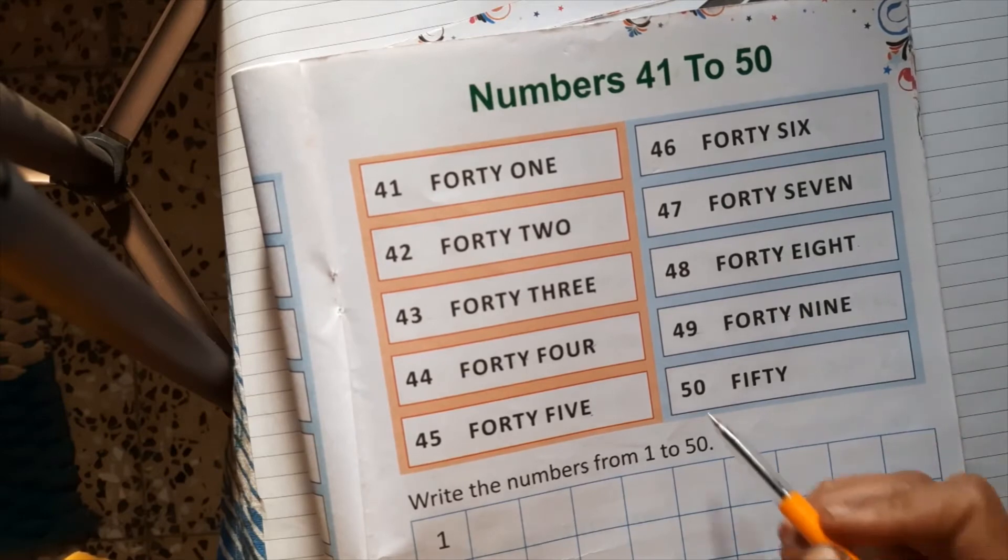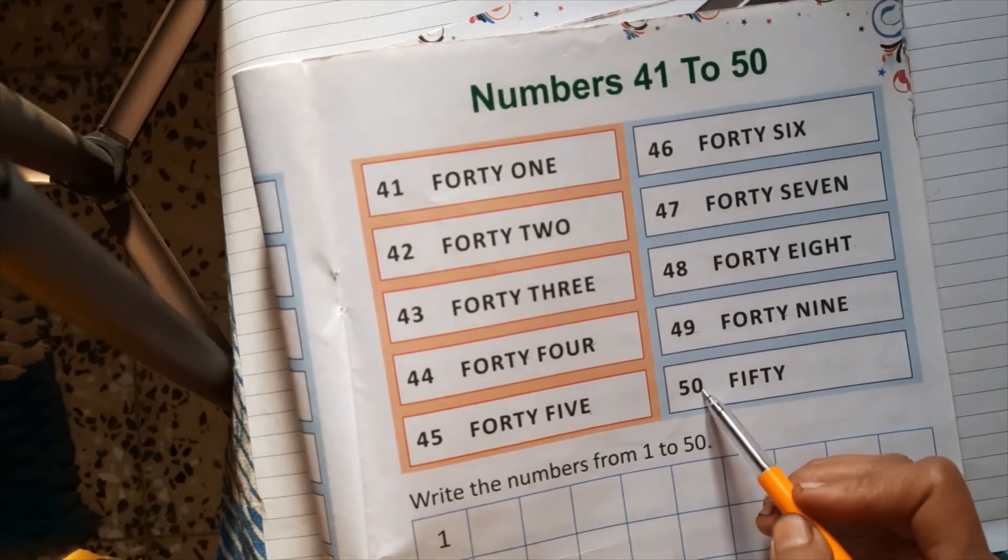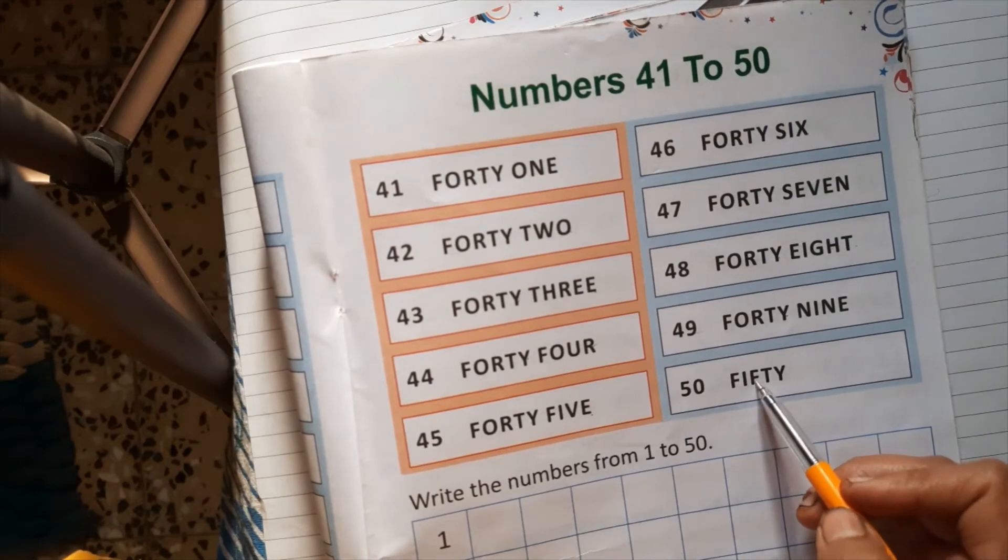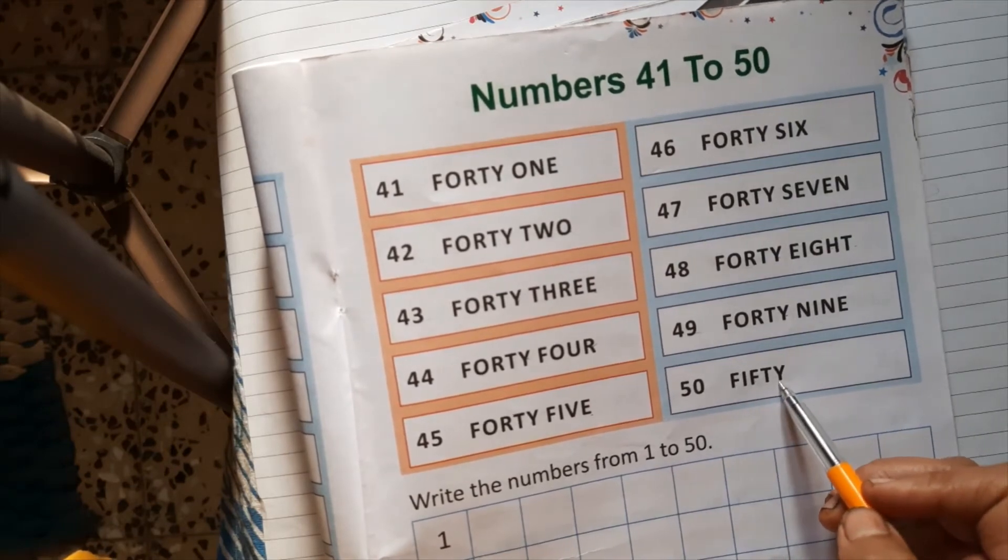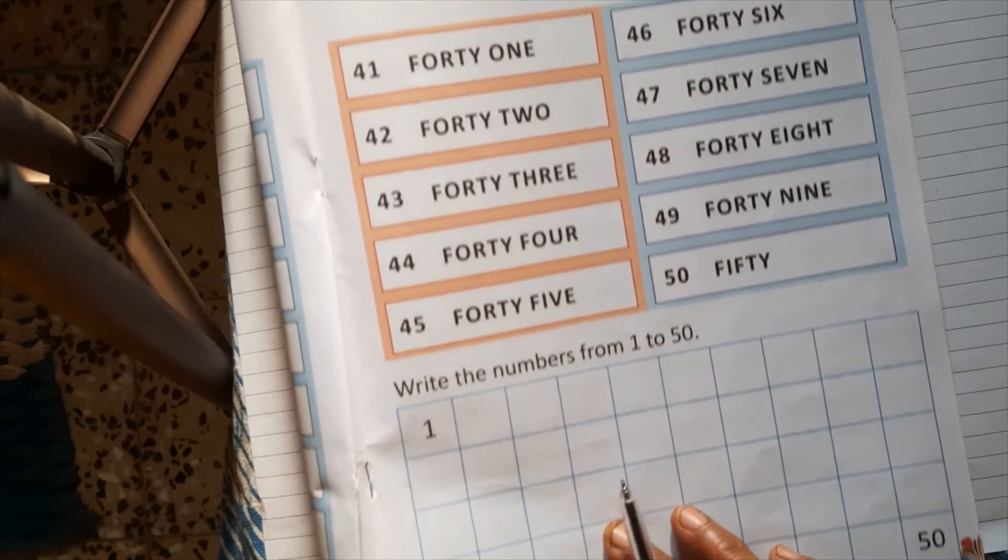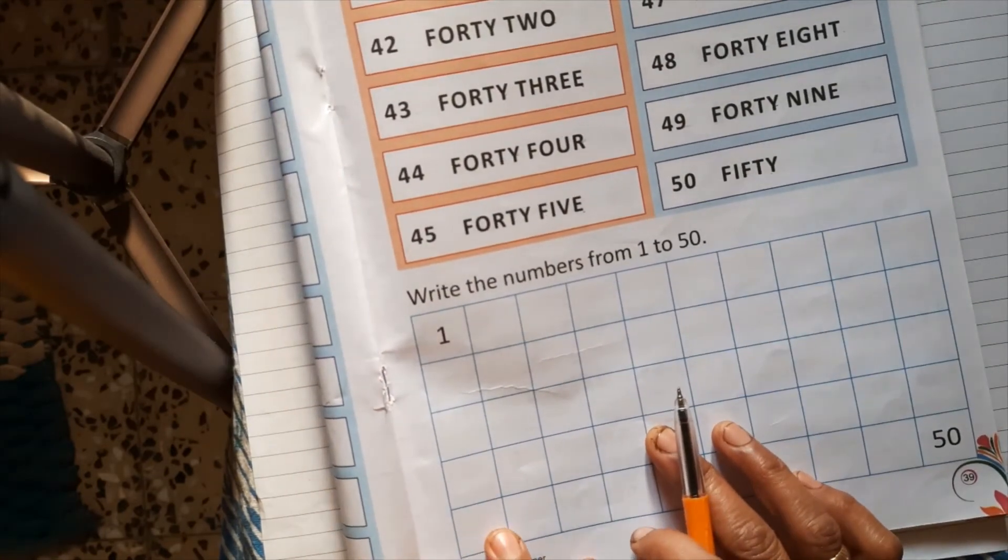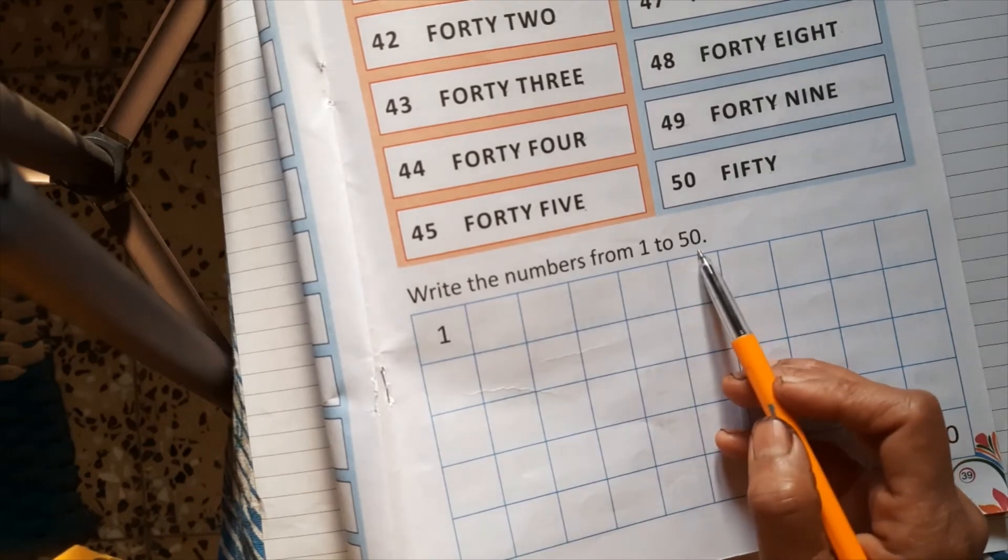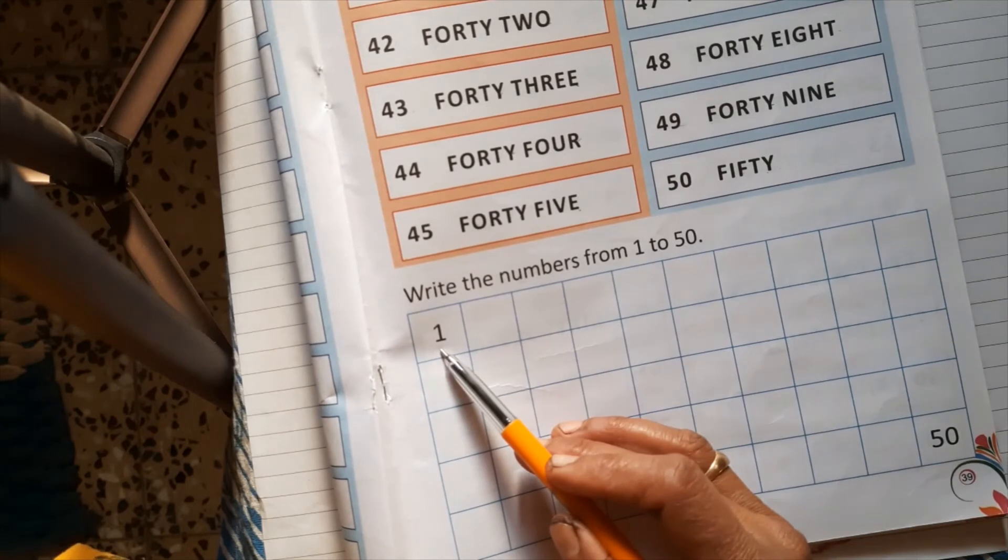50, 5-0-50. 50 spelling is F-I-F-T-Y, 50, 50. Next question, write the numbers from 1 to 50. आपको 1 से 50 तक numbers लिखने हैं. 1 is already right.